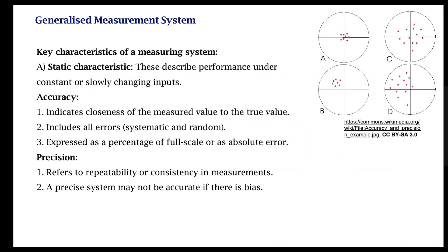The first static characteristic is accuracy. This describes how close you are to the true value. In many cases you don't know what the true value is, but if you have an estimate, how close your data is to that true value is called accuracy. It accounts for all types of errors — both systematic and random errors.